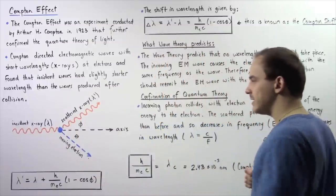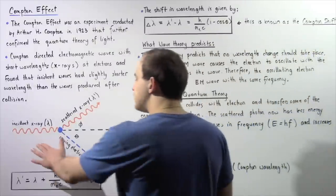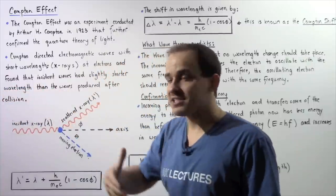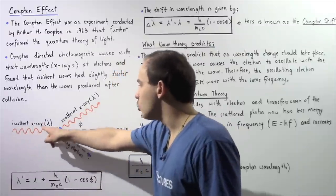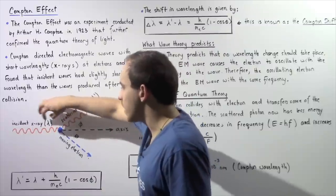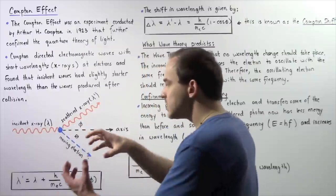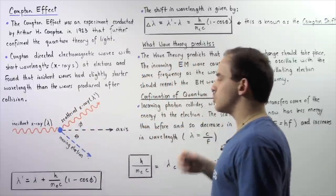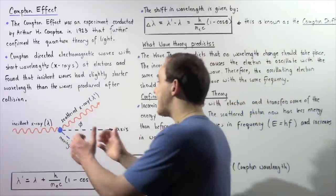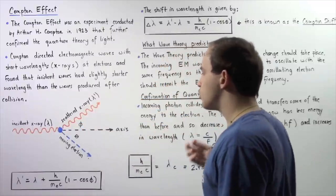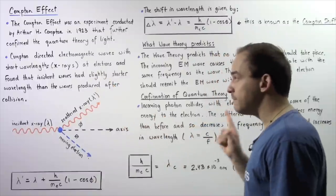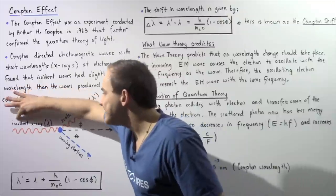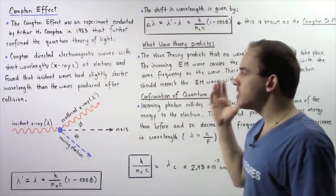Looking at a diagram of the collision: this is our incoming incident X-ray with a wavelength given by lambda, shown as a sinusoidal wave. This is our stationary electron, and when the collision takes place, some of that energy is absorbed by the electron and the electron moves away at some angle theta with respect to the horizontal axis. What Arthur H. Compton found was that the wavelength of the scattered X-ray was slightly larger than the wavelength of the incident X-ray, and this effect became known as the Compton Effect.